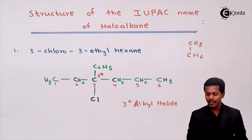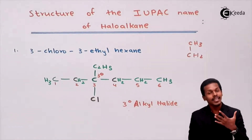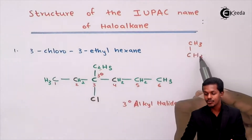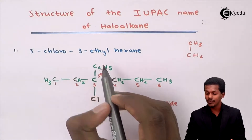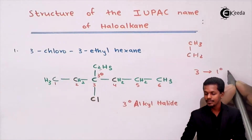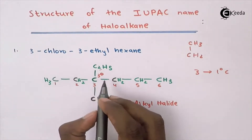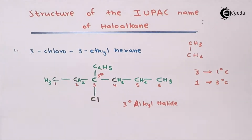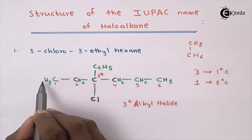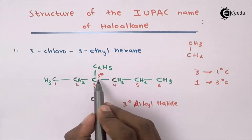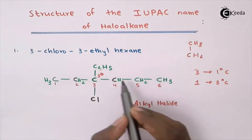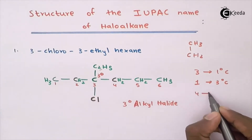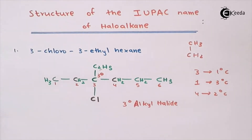Now let us count the primary, secondary, and tertiary carbon atoms. There are three primary carbon atoms. There is one tertiary carbon atom as discussed. For secondary carbons: carbon 2 is attached to two carbons, carbon 4 is attached to two carbons, and within the ethyl group the CH2 is also secondary — giving four secondary carbon atoms in total.